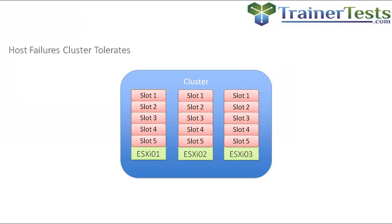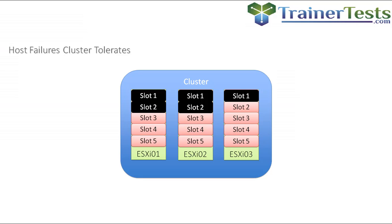All of our hosts in this case support the same number of slots, and let's assume that High Availability is configured to tolerate a single host failure. That means we need to set aside five slots as spare capacity.